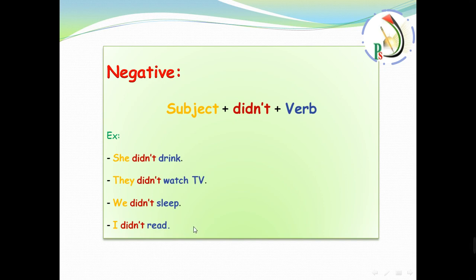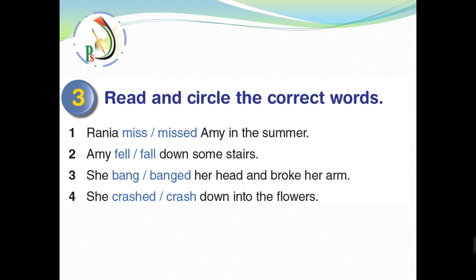And the last activity. Let's practice. Read and circle the correct words. I think it's very easy after we explain the rule. Circle the correct words. Because all the adventure that happened with Amy was at summer time, last summer. Words like last or yesterday, we use the past simple. These are the keywords: last, yesterday, or any date in the past.